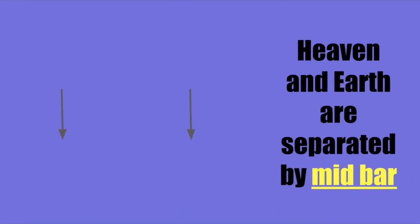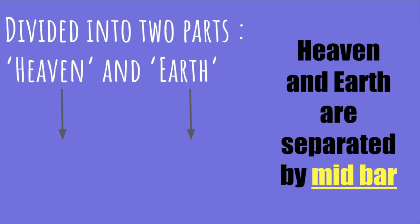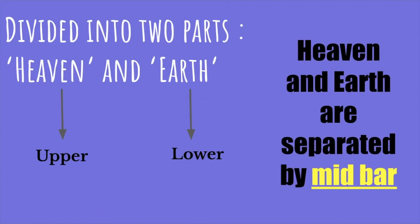Let's discuss about the parts of the Abacus. Abacus is divided into two parts. The upper part is known as heaven and the lower part is known as earth. For Abacus, we call parts as deck. Heaven and earth are separated by mid bar.